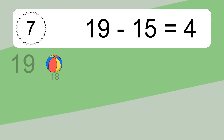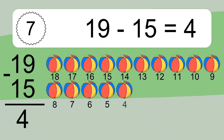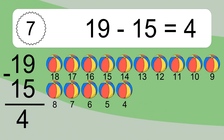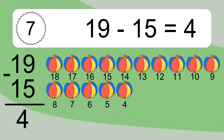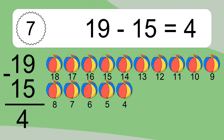19 minus 15 equals 4. Let's count it: 18, 17, 16, 15, 14, 13, 12, 11, 10, 9, 8, 7, 6, 5, 4.